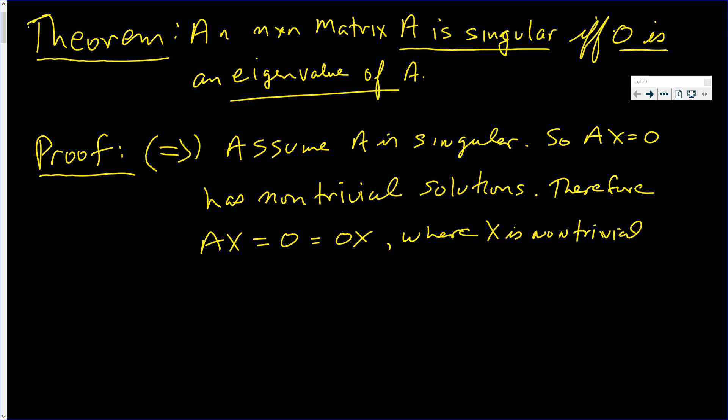So let's see what we have. We know that AX equals 0 and X is non-trivial. And we also know that 0X equals 0. That is, AX equals 0X where X is non-trivial. That's a lambda. AX equals lambda X.